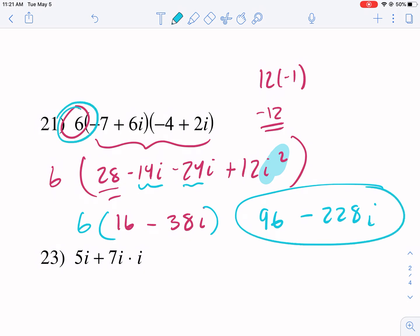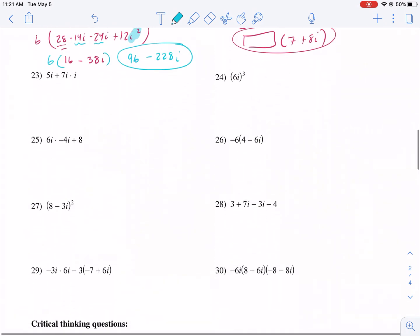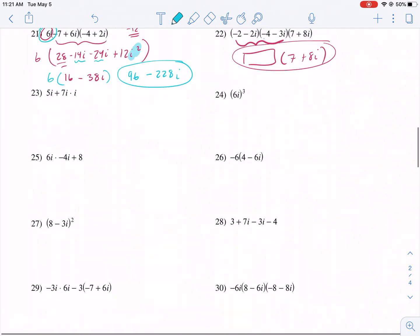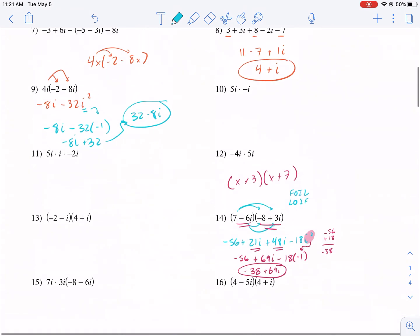Okay, we multiplied the 6 at the end. We FOILed first. I hope you found this video helpful. This should allow you to do all these questions on this worksheet.